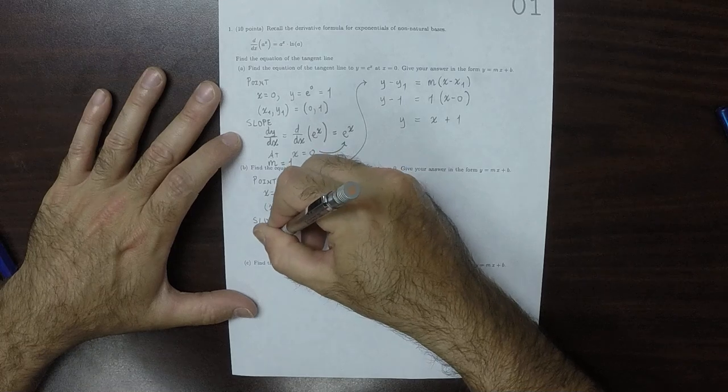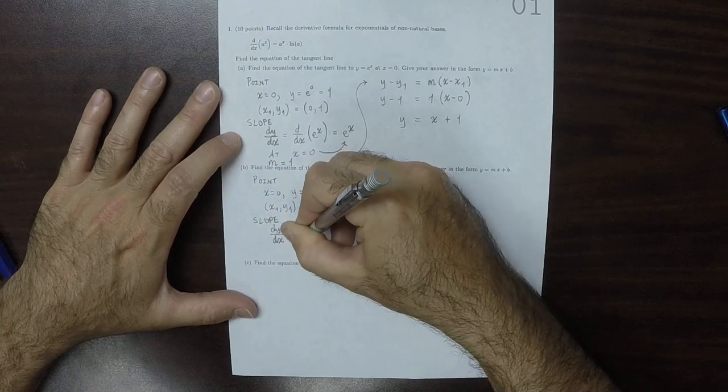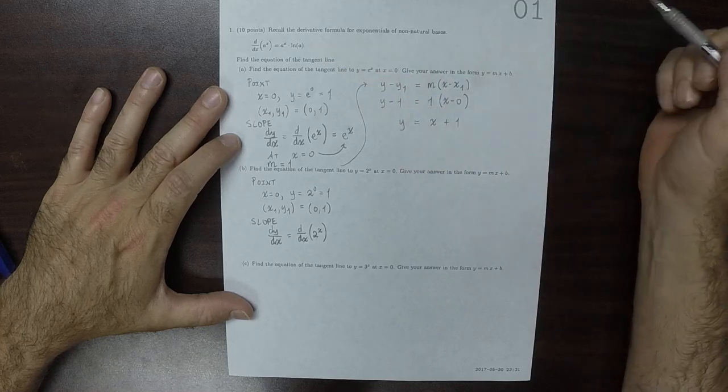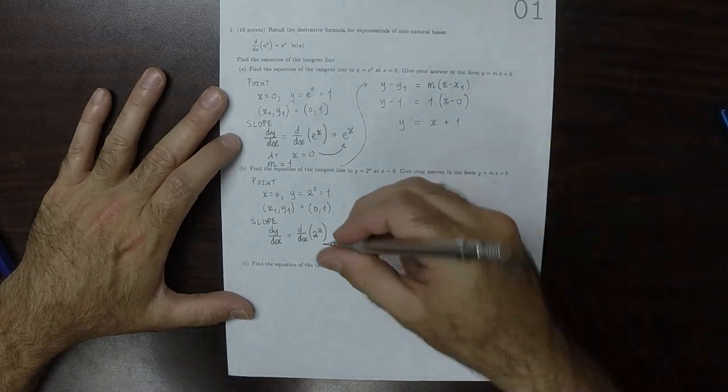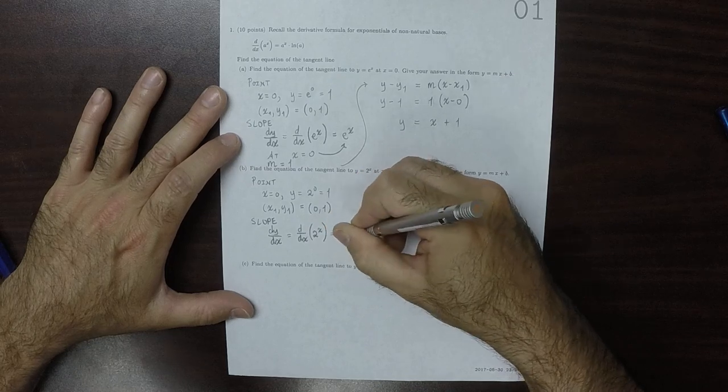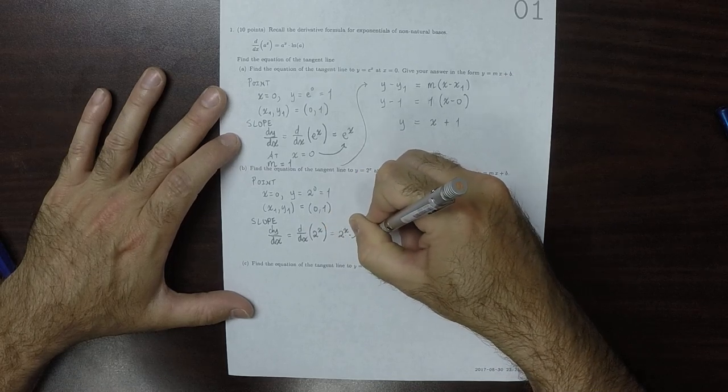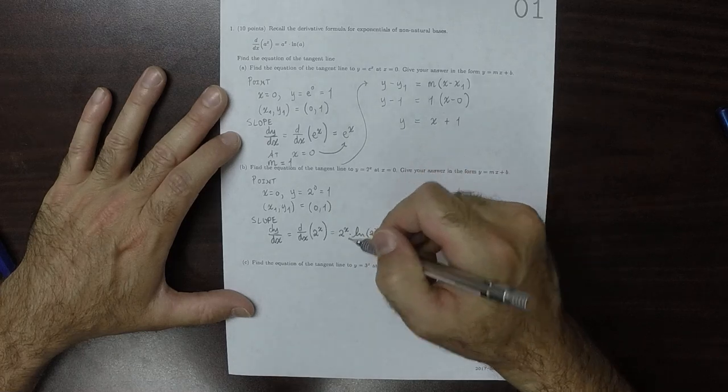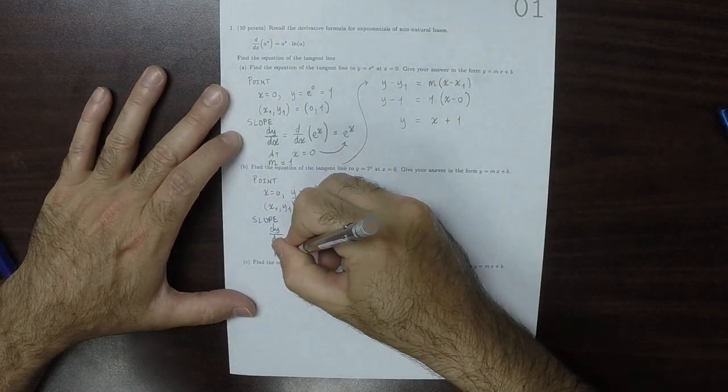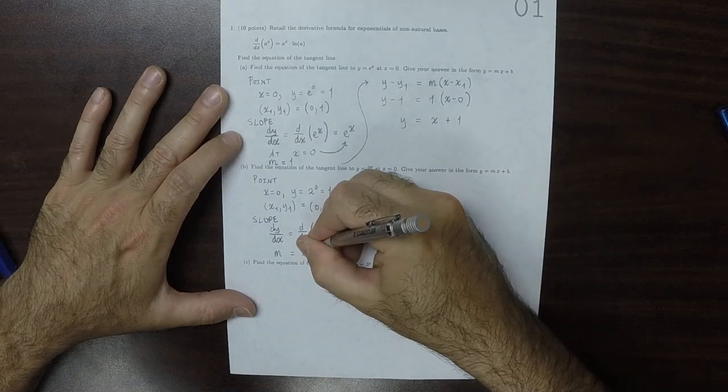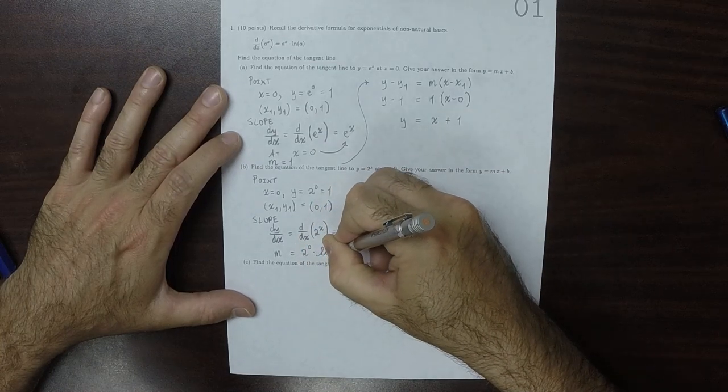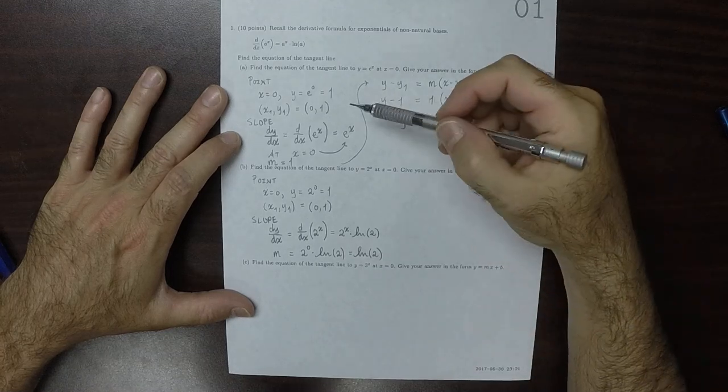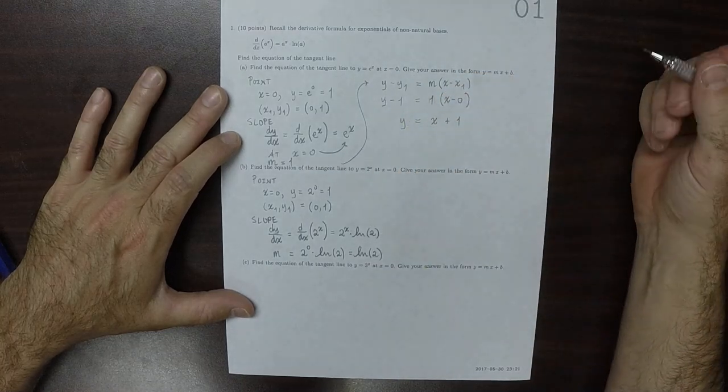dy dx is the derivative of 2 to x. And then, recalling the rule stated above, that is 2 to x multiplied by the natural logarithm of 2. And then the slope is what you get when you plug in x is 0. So the slope is 2 to 0 times the log of 2, which is just the log of 2. So in part a, the slope was 1. In part b, the slope is the logarithm of 2.